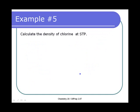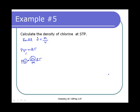Next, calculate the density of chlorine gas at STP. Density = mass/volume. Looking at the ideal gas law PV = (mass/molar mass) × RT, we have both volume and mass in the equation. If we rearrange so mass and volume are on one side, mass/volume is density. Since we have STP, we have pressure, temperature, R, and the molar mass of chlorine gas — we have everything we need.